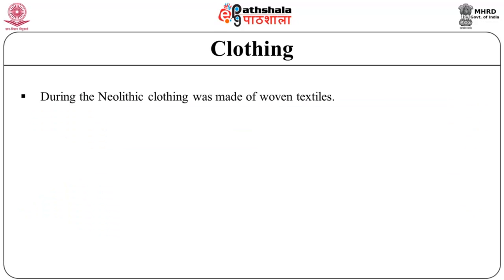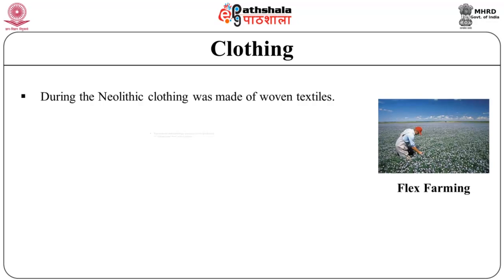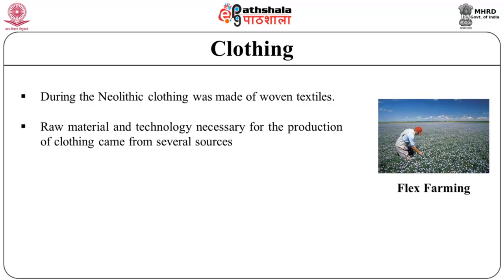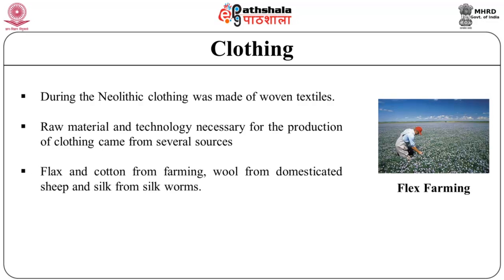During the Neolithic, clothing was made in woven textile styles. The raw materials and technology for clothing came from several sources: flax and cotton from farming, wool from domesticated sheep, and silk from silkworms.